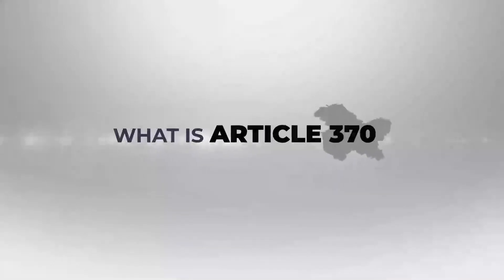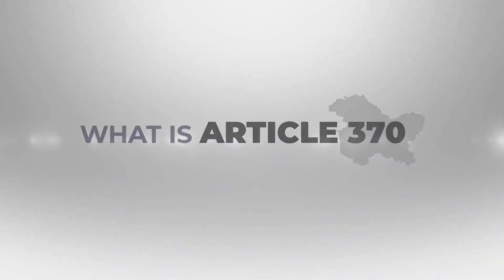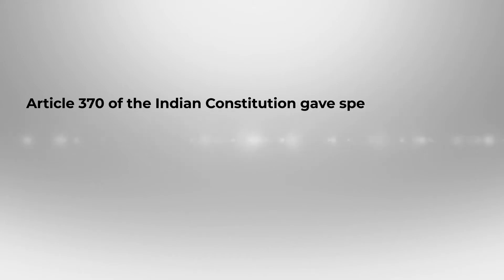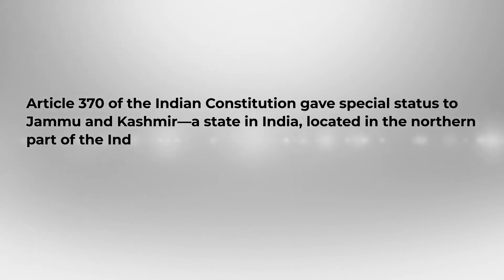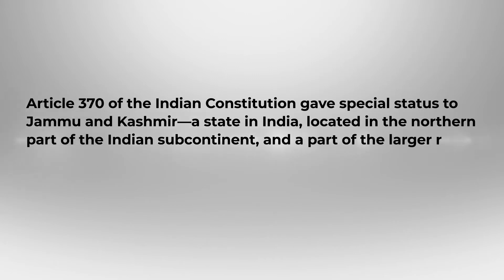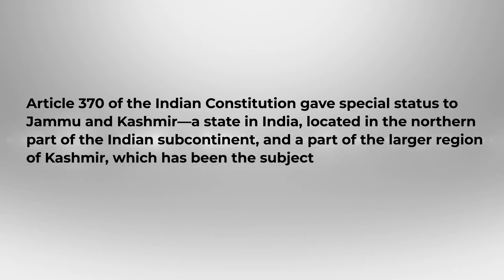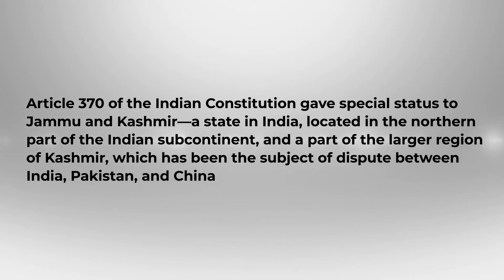What is Article 370? Article 370 of the Indian Constitution gave special status to Jammu and Kashmir, a state in India located in the northern part of the Indian subcontinent, and a part of the larger region of Kashmir, which has been the subject of dispute between India, Pakistan, and China.